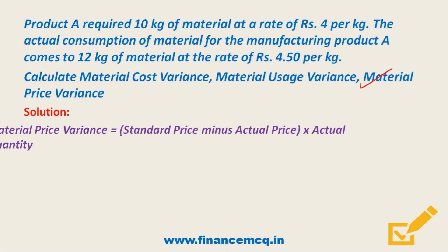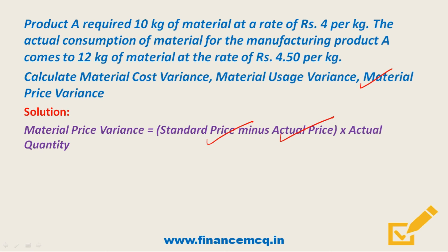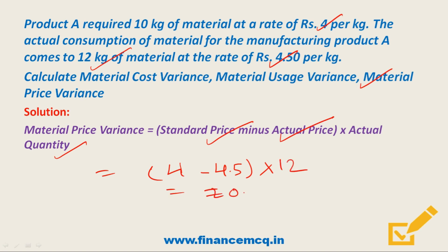Now let's see Material Price Variance. Formula: (Standard Price minus Actual Price) × Actual Quantity = (₹4 minus ₹4.50) × 12 = (minus ₹0.50) × 12 = minus ₹6. Again a negative value, so this is an adverse variance. I hope by this example your concept of variances is clear.